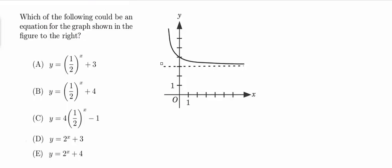And basically the question says, which of the following could be an equation for the graph shown in the figure to the right? So the first thing I notice about this graph just looking at it is that it has a horizontal asymptote